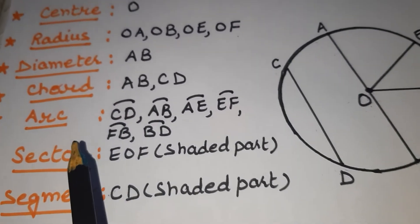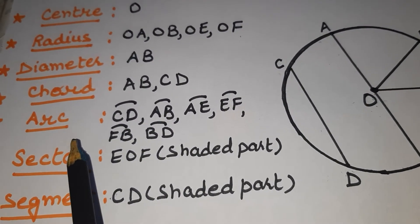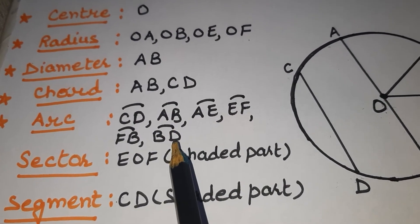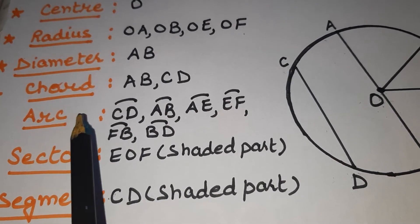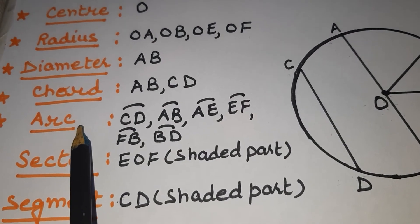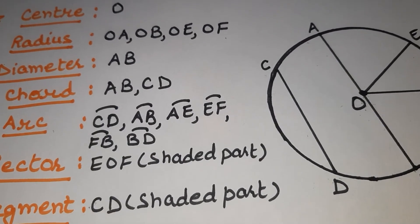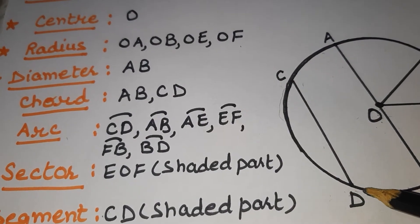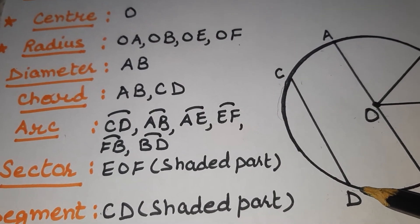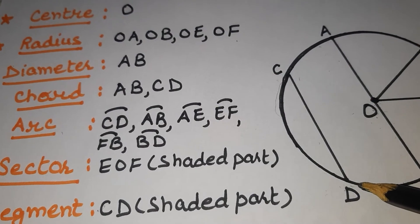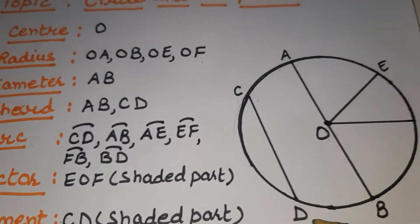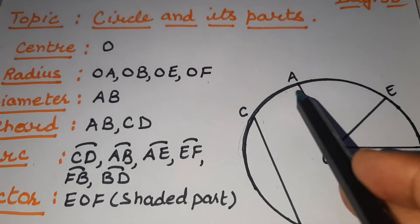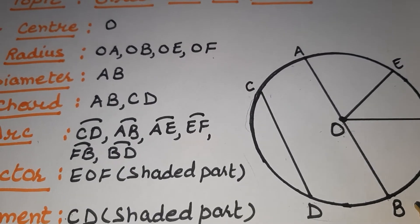Next is arc. Now, what is difference? If you see, all these are line segments. But I have written here under the heading of arc. Now what is arc? Arc is this one, this round portion. Like CD is arc. This AB from this side or from this side, this is arc.